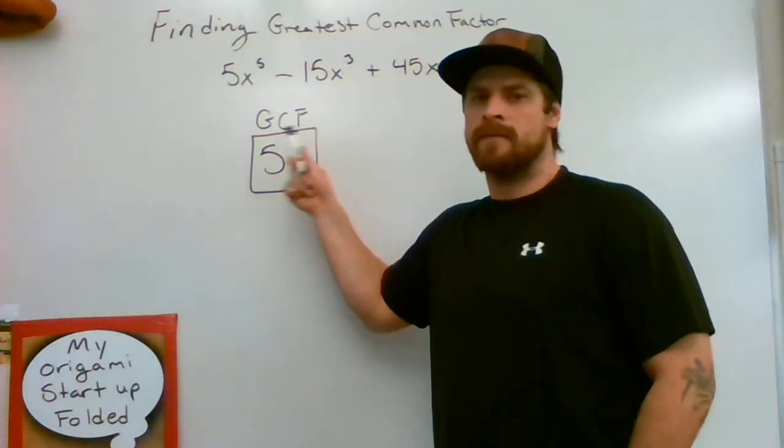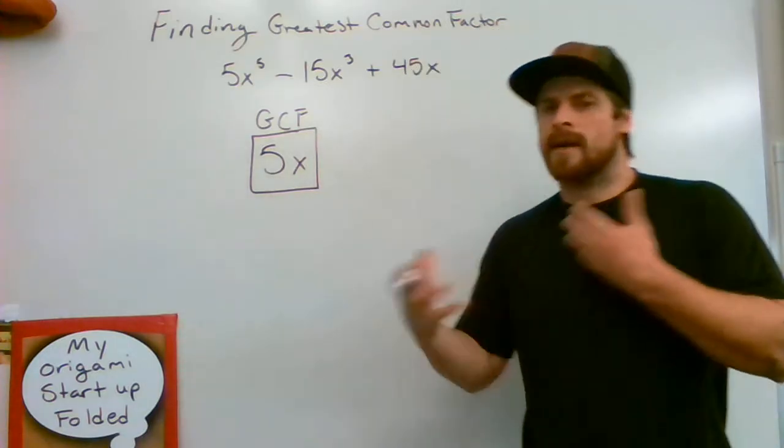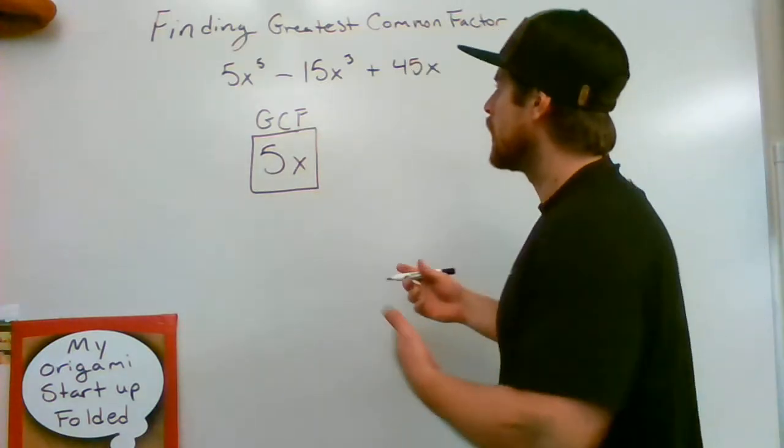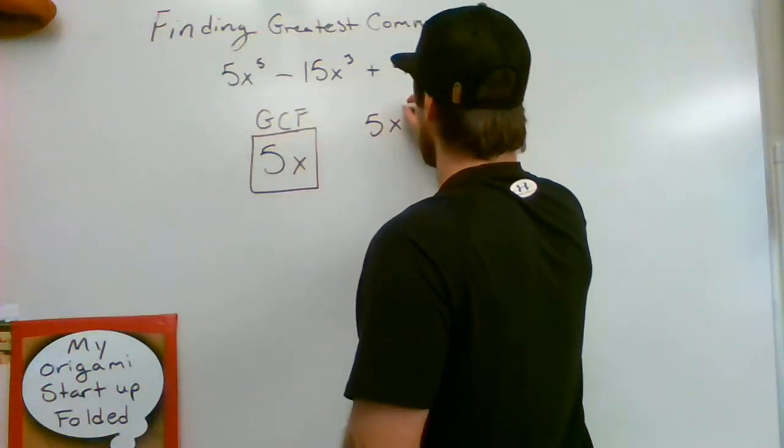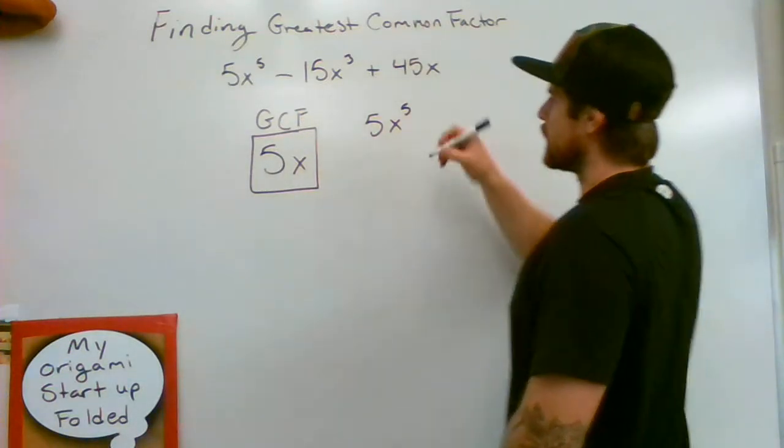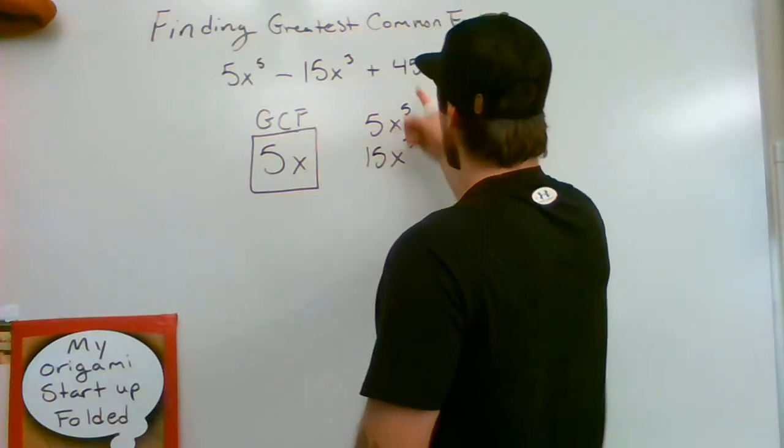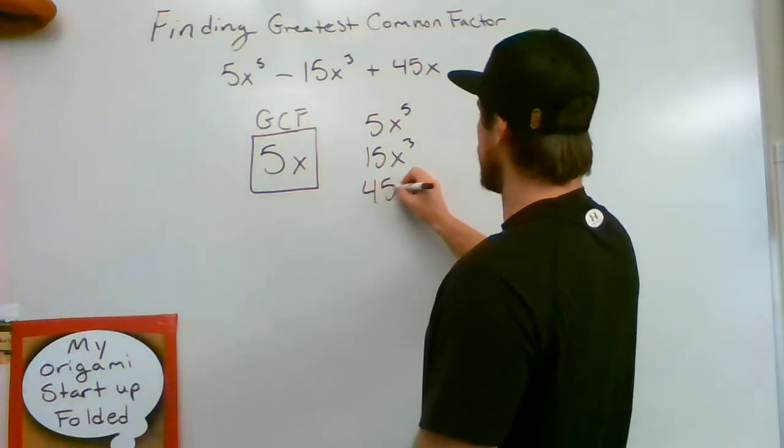Now, how does this work? How can I show this so it makes sense to you? If you list each term out, what do they have in common is what we're really saying. What's the common factor between each one of these? So if I were to write these out and list my prime factors...